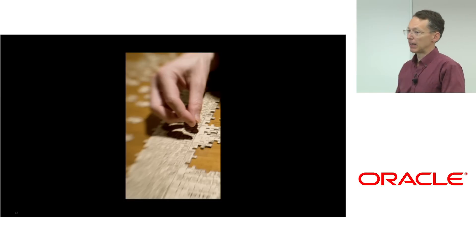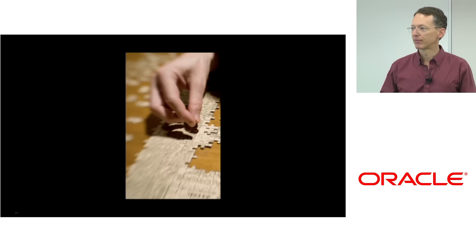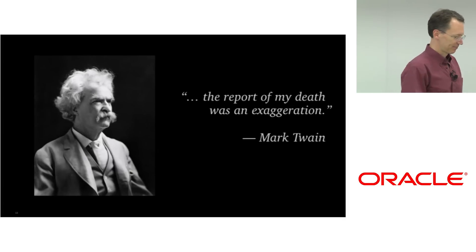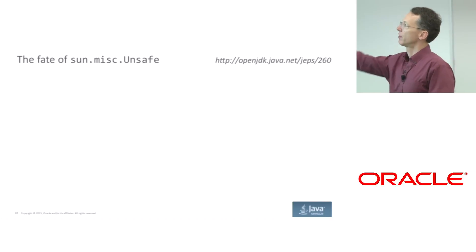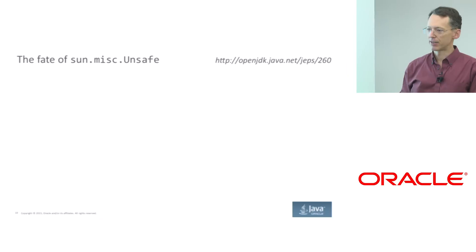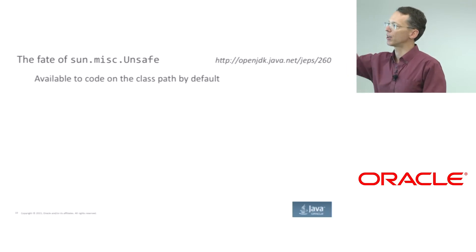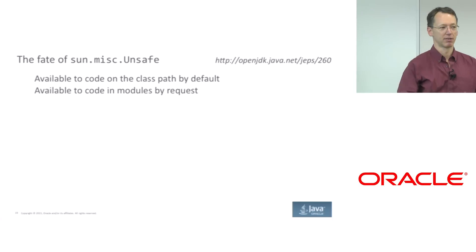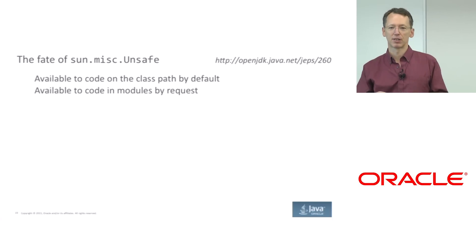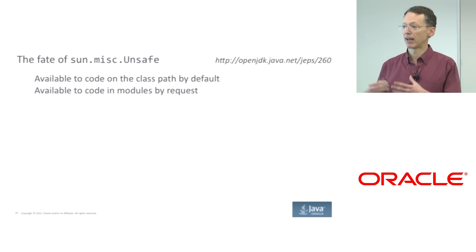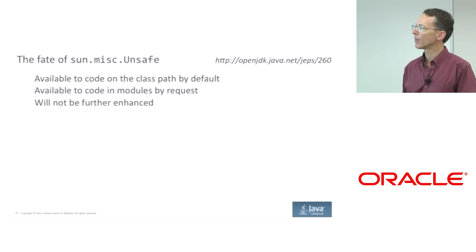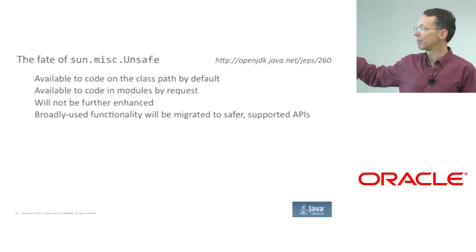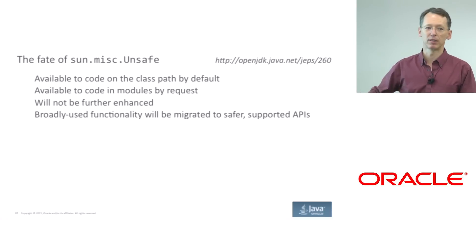In the long run, this is what we want to do with all internal APIs, and this is what we want to do with sun.misc.Unsafe. We've been saying for a while now that we would do this in JDK 9 — that has never actually been the plan. The actual plan, in JEP 260 which I published last week, is as follows: in JDK 9, it will be available to code on the class path by default. It will be available to code in modules by request — if you put your code in a module, you can declare that module requires sun.misc.Unsafe's containing module and continue to use it, but you will be aware that you're using it. It will not be further enhanced, and over time broadly used functionality will be migrated to safer, supported APIs, some of which Paul will discuss.